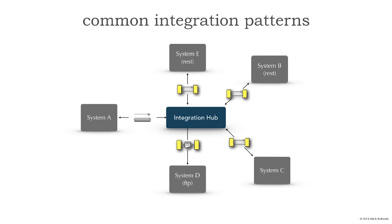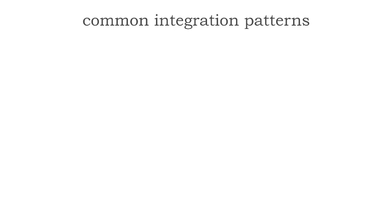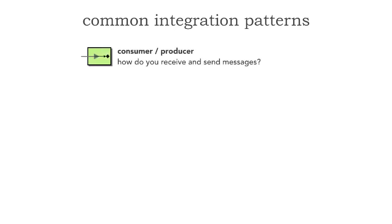Last week we saw that we can tie all these systems together. In terms of an integration hub, what we're going to do is see the patterns of integration architecture that this integration hub actually implements. The five most common patterns I want to show you are: first, the consumer-producer — how do you receive and send a message through an integration hub? It seems really simple, but it's incredibly conceptually powerful.